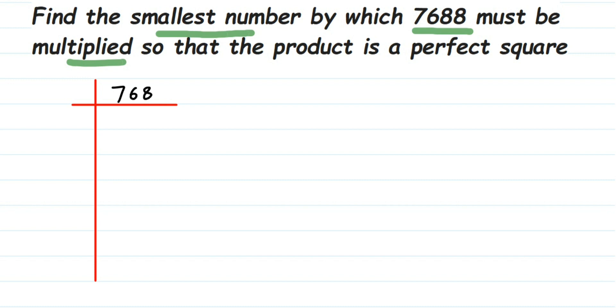I'm going to divide this number with prime numbers. Remember, you should take only prime numbers. This is an even number, so I'm going to take two. Two times three is six, one is the remainder, making 16. Two eights are 16, two fours are eight. I'm dividing here itself, but if you want you can write it separately.